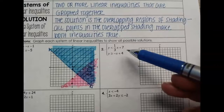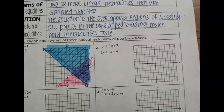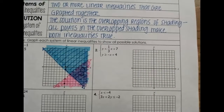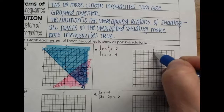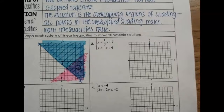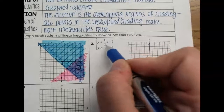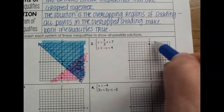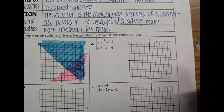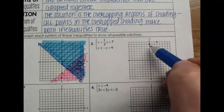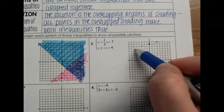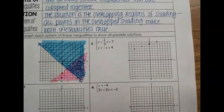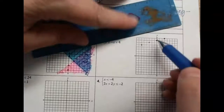These are already in slope-intercept form, so they are easier to graph. The top inequality starts at positive 7, and we have a slope of positive one-third, which means go up 1 and right 3. Since I ran out of room going up and right, I count the opposite direction: down and left. I don't have an equal sign, so that means my line is dotted.